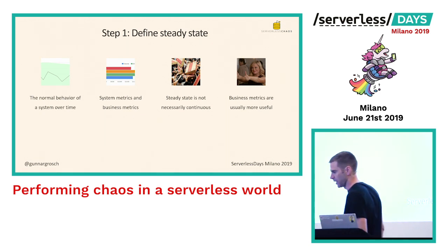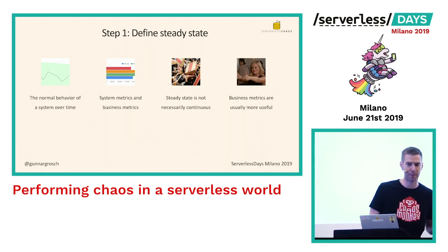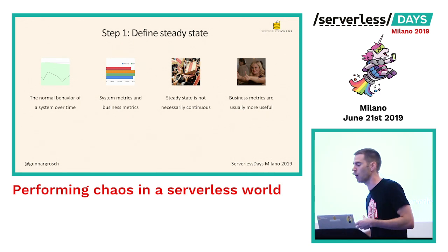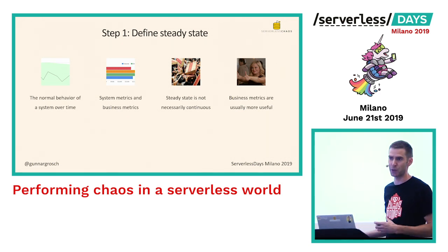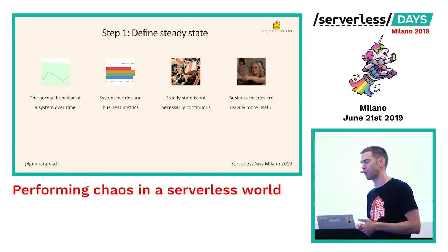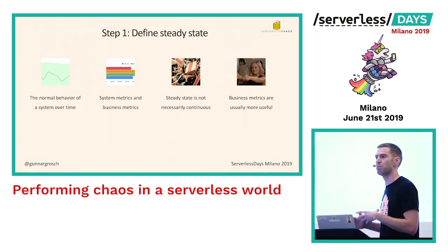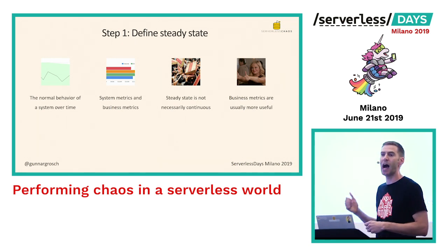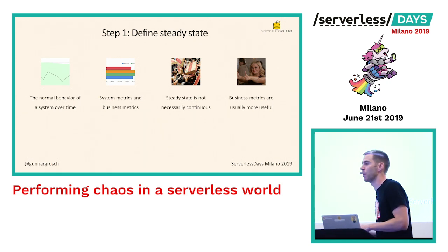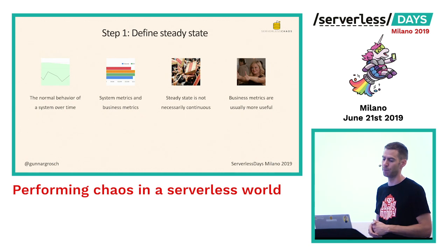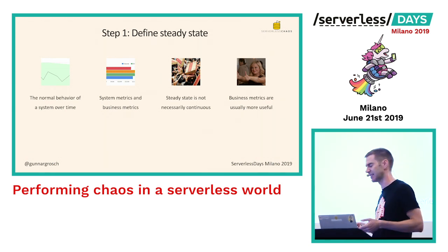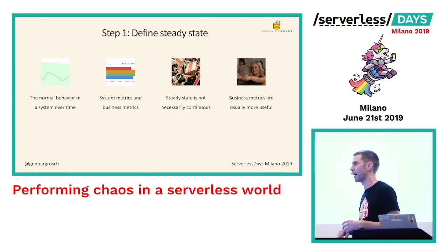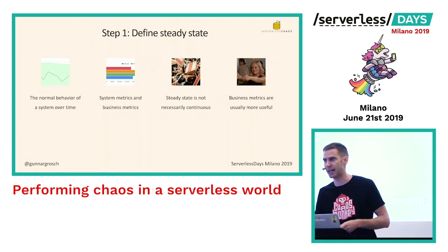When we do chaos engineering, we work in a few steps. The first step is to define the steady state — we need to know how the system should behave normally. To do that, we need metrics: system metrics and business metrics. Business metrics are usually more useful — things like how many users are logged in, or how many things are bought from the e-commerce site. We also need to be aware that the steady state isn't always continuous. Things might change — Black Friday is a good example.